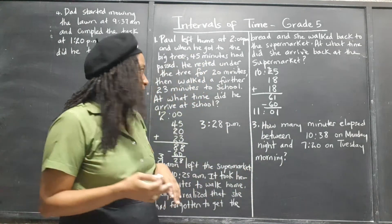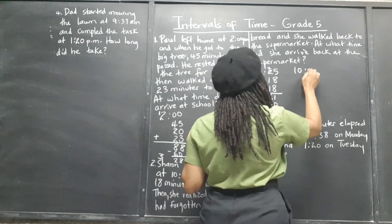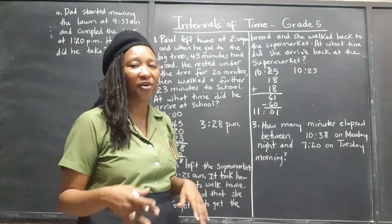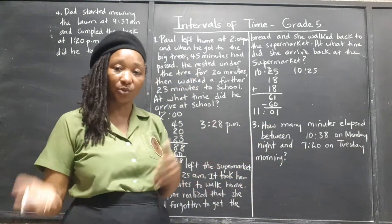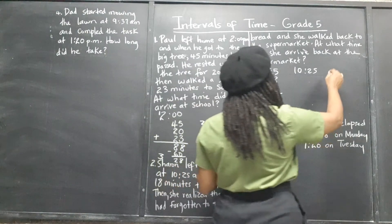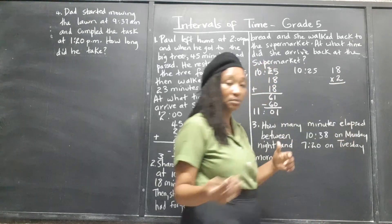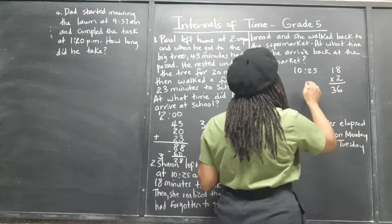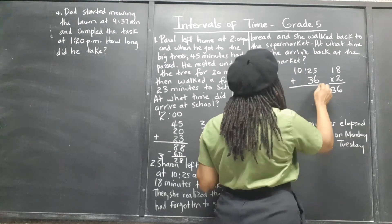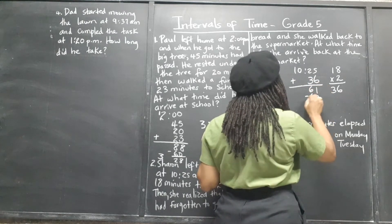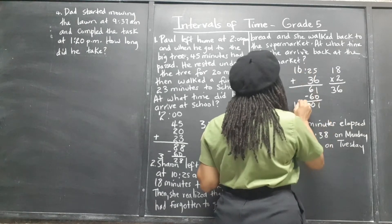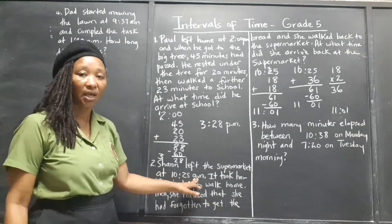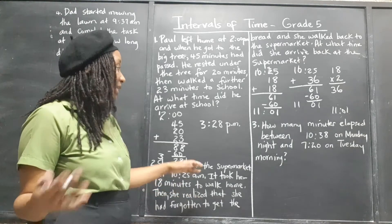We could also do it another way. Since she started at 10:25 and is walking at the same pace, we could say 18 minutes times 2 — supermarket to home, home to supermarket — which gives 36 minutes. We add that 36 minutes to 10:25 and still get 61 minutes, still have to take out the 60 and carry that over. So we still get 11:01. Is that AM or PM? It's still morning — it hasn't passed noon yet. It's 11:01 AM.